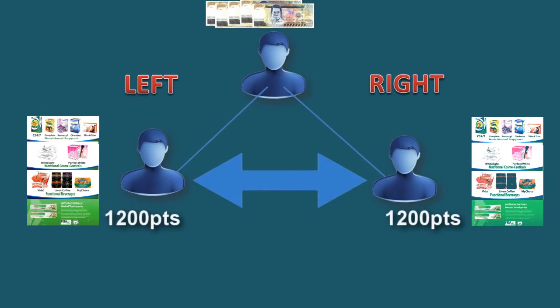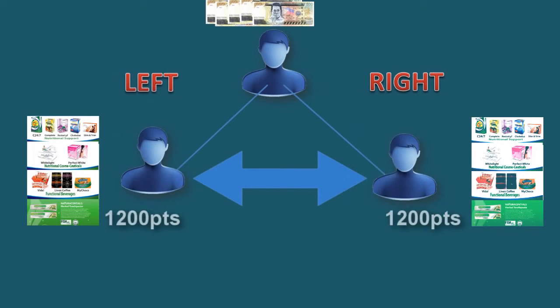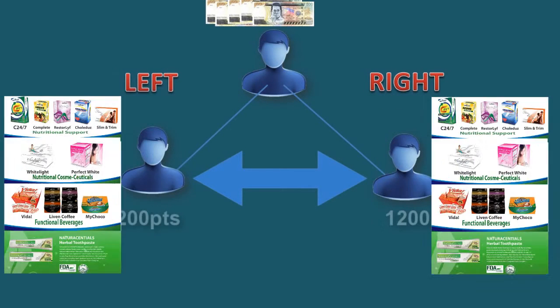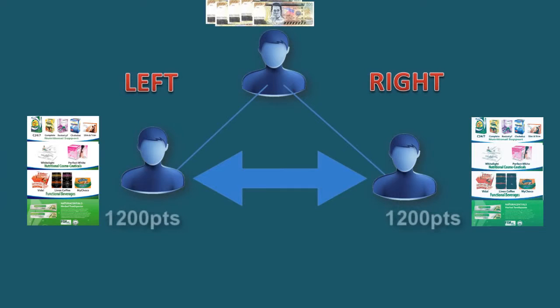That would be matching binary points person to person, person to products, and products to products against your left and right.